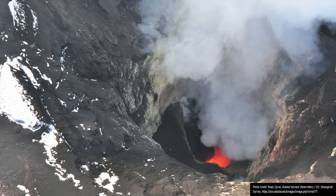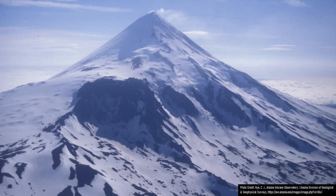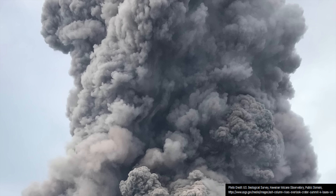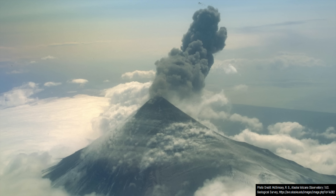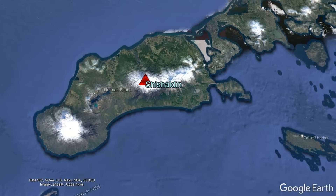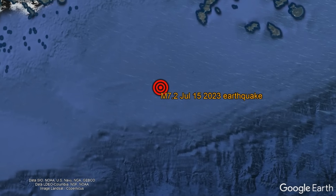A webcam then picked up a faint orange glow, which was later confirmed to be fresh lava emitted from a 15-foot-high spatter cone. This eruption remained almost completely effusive until a significant explosion occurred at 1:09 a.m. local time on July 15th, sending a plume of ash to a height of 40,000 feet. Weaker explosions subsequently continued before becoming intermittent, and then the magnitude 7.2 earthquake struck.